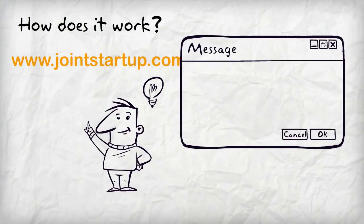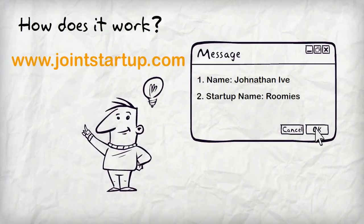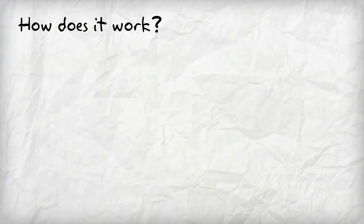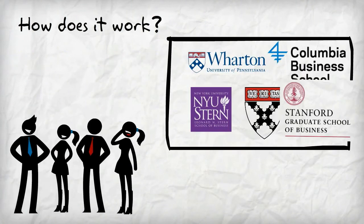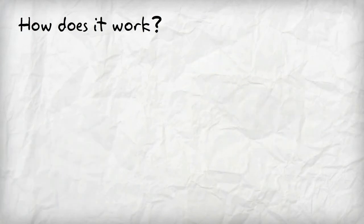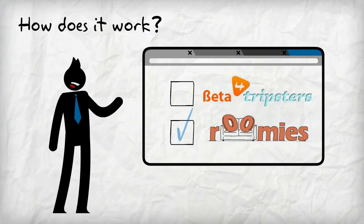So how does it work? Entrepreneurs go to our website and fill out our simple application. We then promote their ventures to MBA students from the best business schools in the U.S. Students select the startups they are interested in and apply online. We review their applications and match them to the startup of their interest.